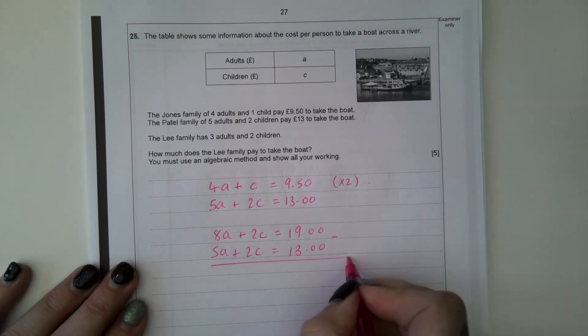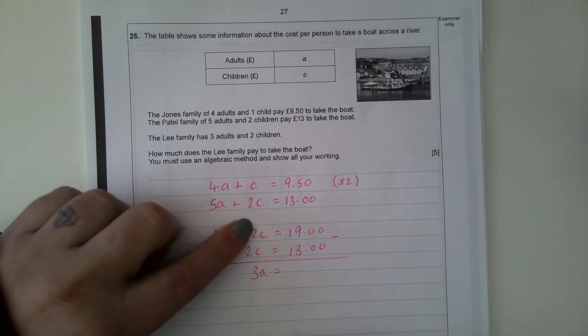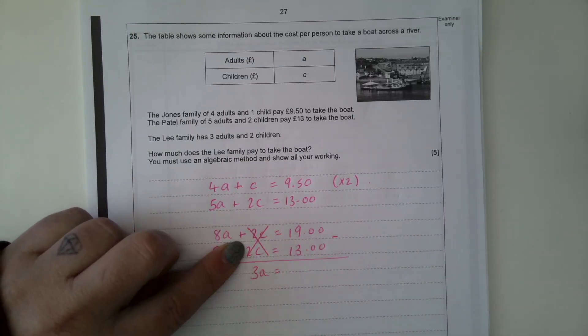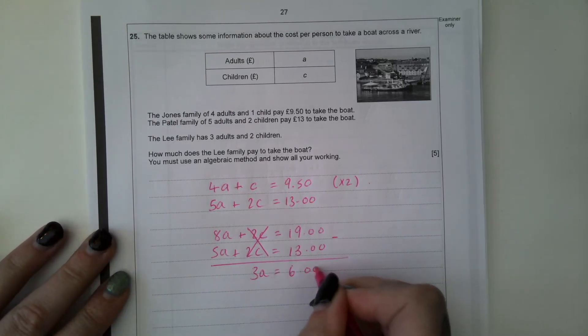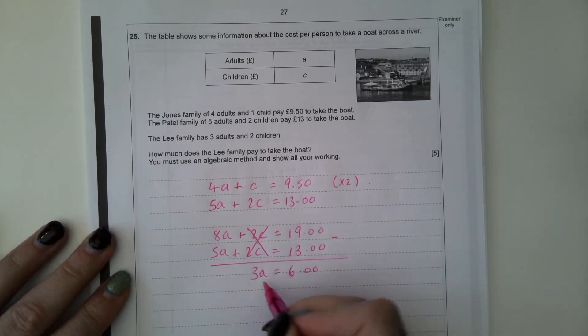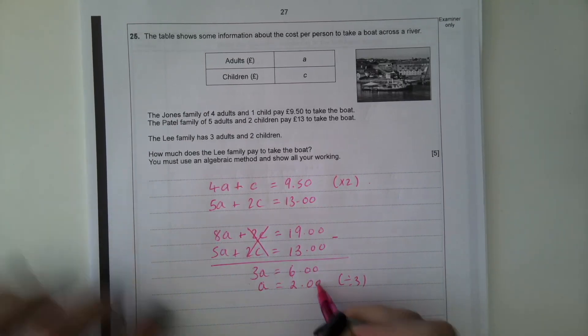So what I've got here are two equations where the C variable matches. So they're both positive here. So I'm going to subtract these equations away from each other to eliminate the C. So 8A subtract 5A is 3A. 2C subtract 2C eliminates it. 19 subtract 13 is £6. So if 3A is £6, if I divide by 3, it tells me that an adult is £2.